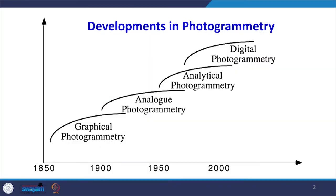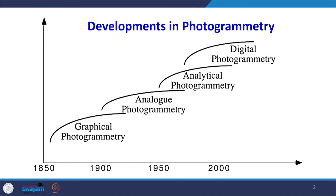Looking at this evolution curve, we earlier had graphical photogrammetry where maps were prepared manually using photographs — placing a piece of tracing paper on photographs to create graphical information. Then came analog photogrammetry using simple devices such as the stereoscope. From 1950 onwards, analytical photogrammetry came into development, using instruments that were mechanical or had a computer. Photographs were scanned and used, and a plotter was present to automatically plot the map.